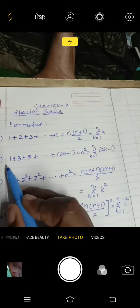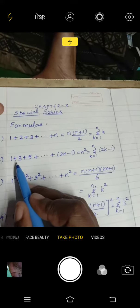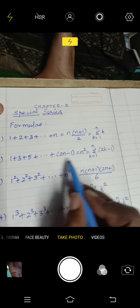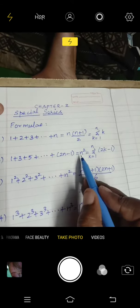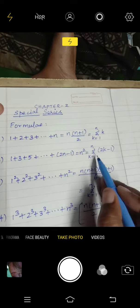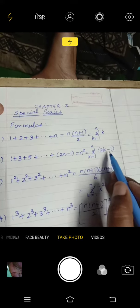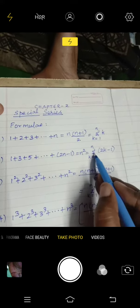Next formula is sum of odd numbers: 1 plus 3 plus 5 plus etc. plus 2n minus 1, and this is equal to n square. This can be represented as summation k equal to 1 to n, 2k minus 1. This symbol is known as summation or sigma.